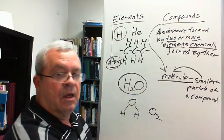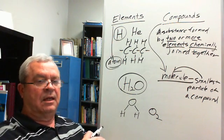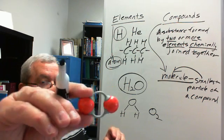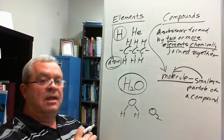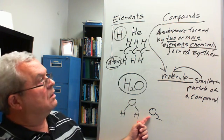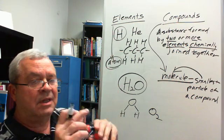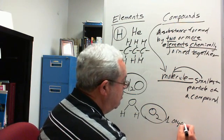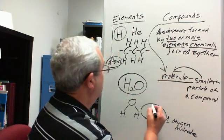O₂ represents reality: the oxygen we breathe in this room exists as little pairs of atoms — oxygen atoms pair up. But would O₂ be a compound? No — compounds require two or more elements chemically joined, and this is only one element. It is chemically joined and it is a molecule — one oxygen molecule — but it is not a compound.